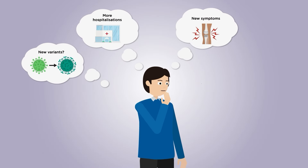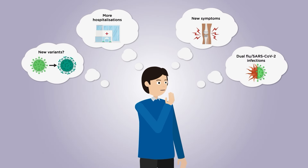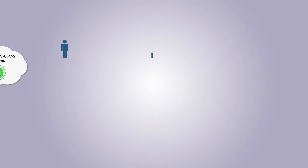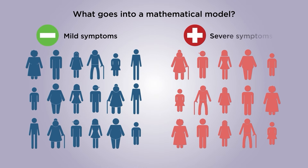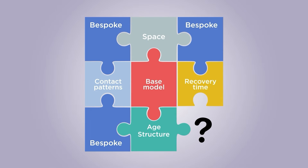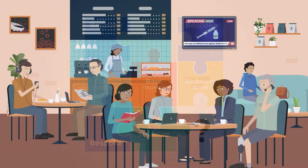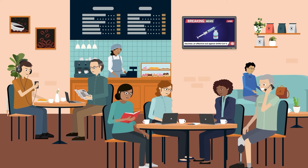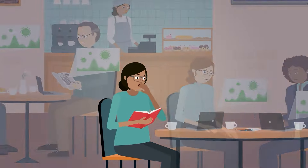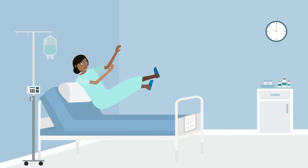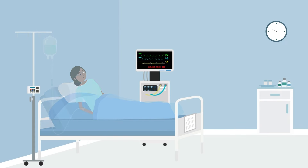Mathematical models also help us to explore what-if scenarios. These models group populations based on whether they're infected or not and how seriously the disease might affect them. They can piece together other information to explore what might happen in the larger population. To assess the potential impact of a vaccine programme, mathematical models can include how likely vaccination reduces the chance of infection, having symptoms, people being admitted to hospital or dying.